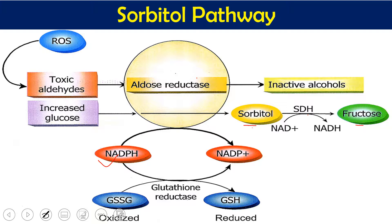Whenever we use NADPH, we must use it efficiently because it is needed for antioxidant processes — for example, in glutathione reduction. If too much NADPH is consumed by aldose reductase, the body will have a deficiency of NADPH, and the antioxidant stock will be depleted. In that case, free radicals will also damage our cells and biochemical components.